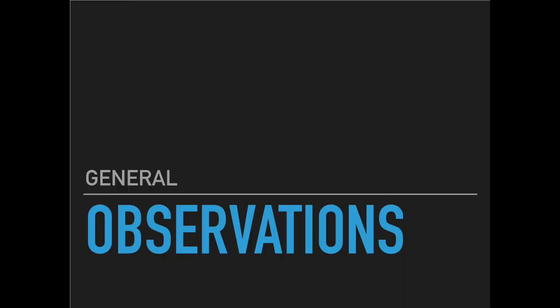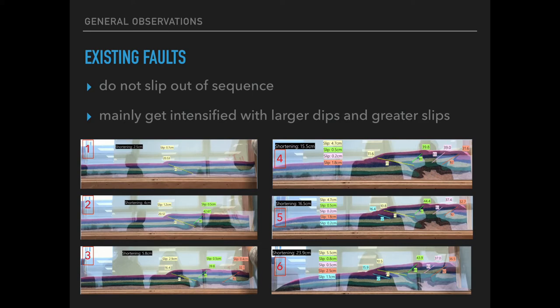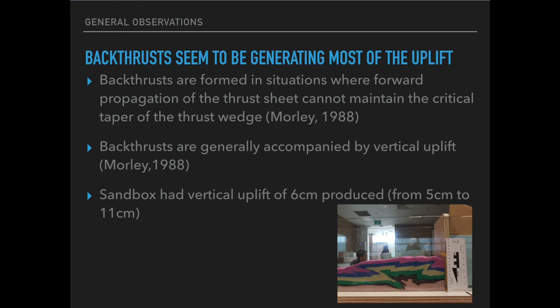Discussion time. General observations: existing faults do not slip out of sequence and they get intensified with larger dips and greater slips. Moreover, the spacing between back thrusts stays approximately similar. The occurrence of back thrusts can be reasoned to be because the forward propagation of the thrust sheet cannot maintain the critical taper of the thrust wedge. These back thrusts are also generally accompanied by vertical uplift, similar to what we observed in our sandbox.